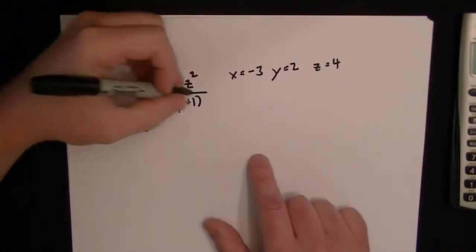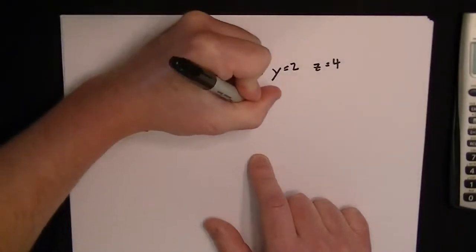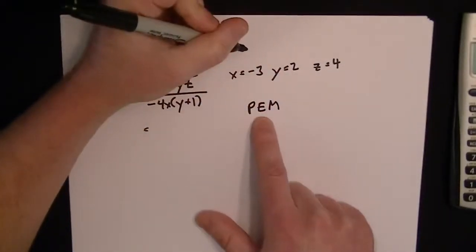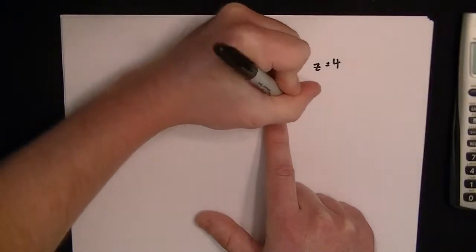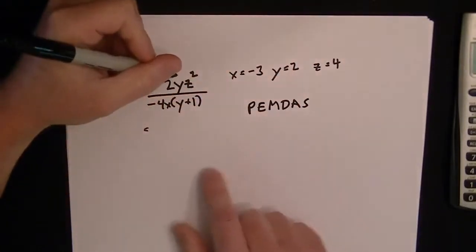So we have to know order of operations. That's this PEMDAS, which is parentheses, exponent, multiplication, division, addition, and subtraction.